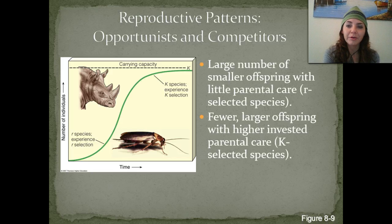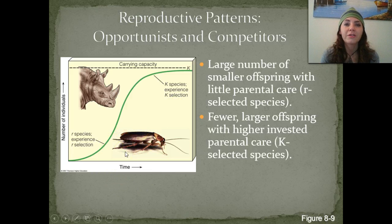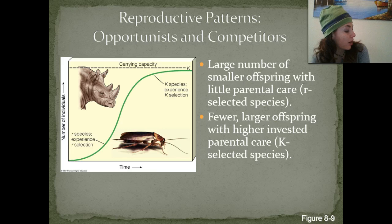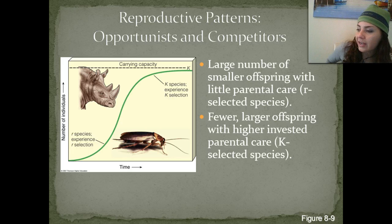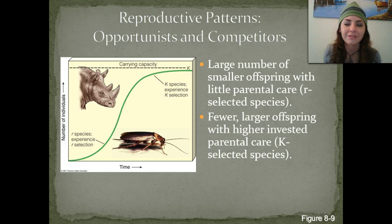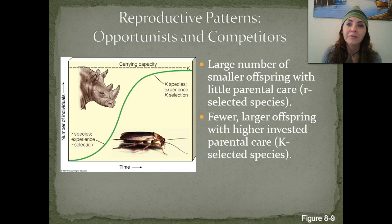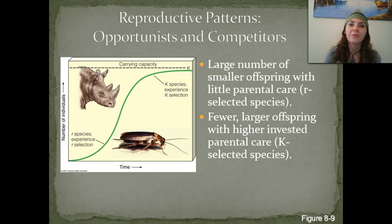Large numbers of smaller offspring with little parental care are referred to as R-selected species. The main example of an R-selected species would be a cockroach — they have tons and tons of offspring with pretty much zero parental care. The cockroach lays her eggs and is gone, never looking back to check on them. However, when organisms produce fewer and larger offspring with a very high input of parental care, we call that a K-selected species, such as mammals. An example would be a rhinoceros — most mammals have a very high input of parental care and take care of their offspring for a long time.